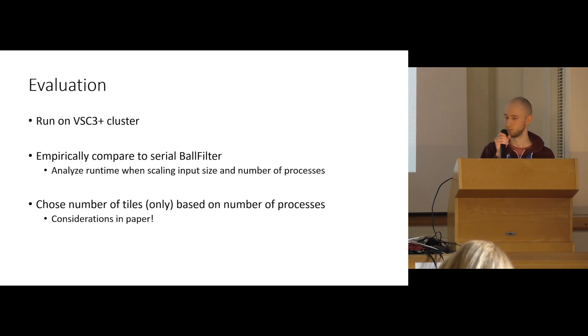We ran our program on the VSC3 plus cluster. It's a high performance computing cluster based in Vienna. It's already shut down. But there's a successor, I guess. I think it's VSC5 or something. And now we want to empirically compare the original ball filter with our distributed version of it. And figure out how it behaves when we add more processes or when we add more inputs, like a larger point cloud. For now, let's just say the number of tiles, like the grid, we choose them based on the number of processes. This might not be the optimal way to do it. But the detailed considerations are in the paper.